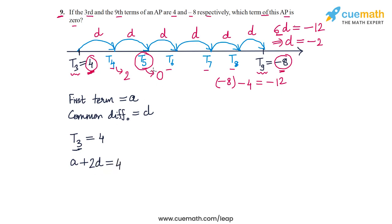We are also told that T9 equals minus 8. This means that A plus (N minus 1)D, or A plus 8D, equals minus 8. Now we have these two linear equations in A and D. Let's write them out here.